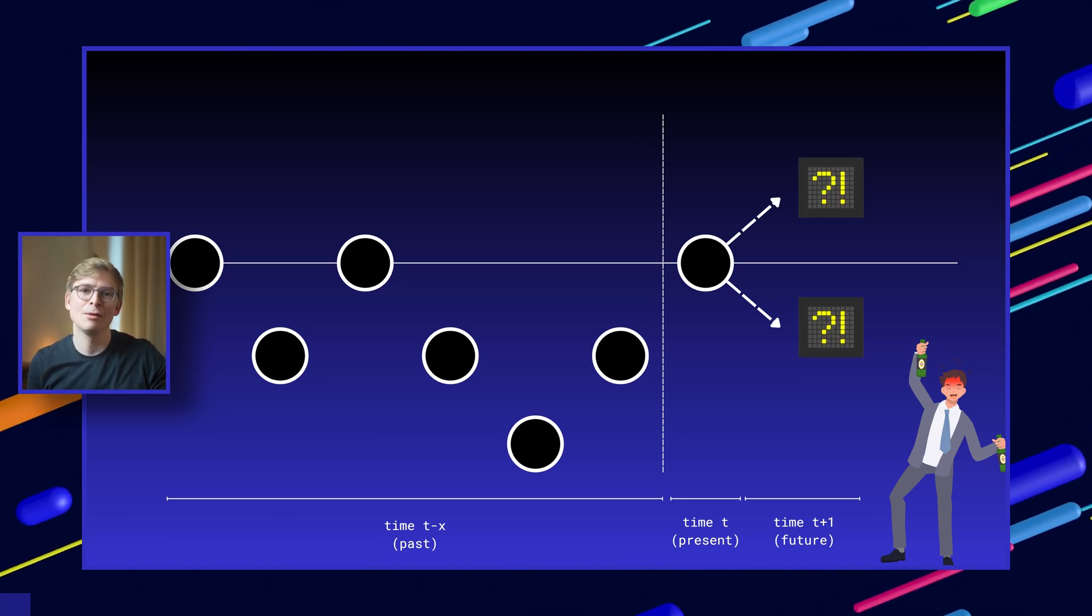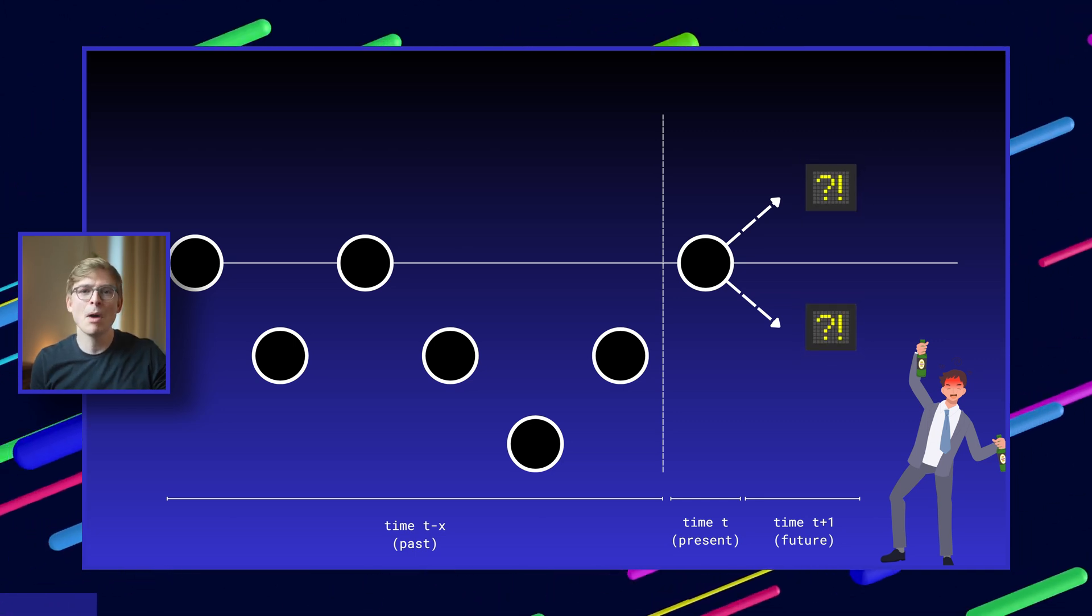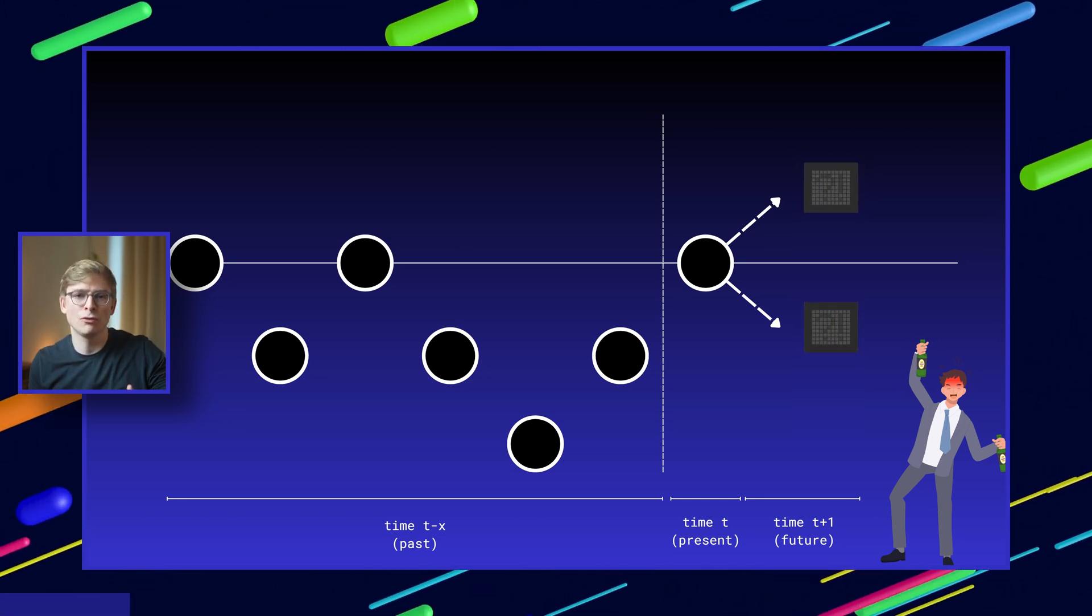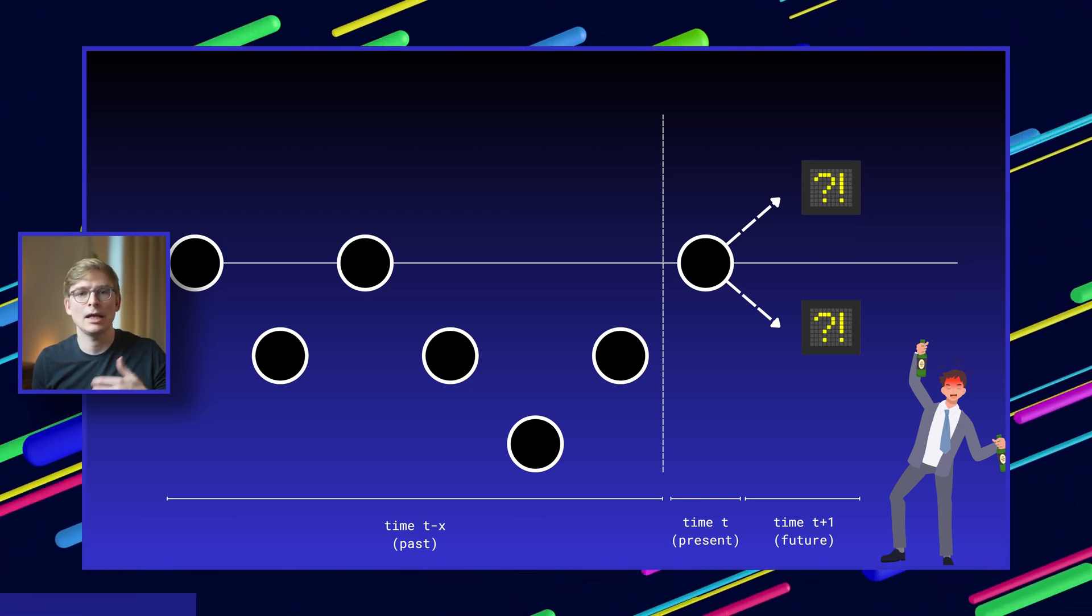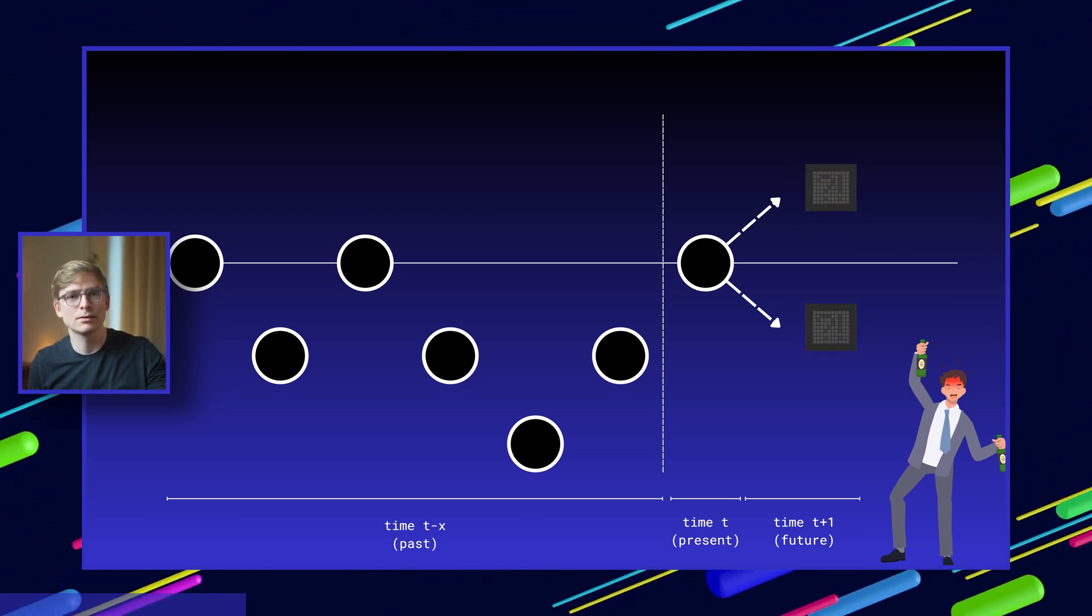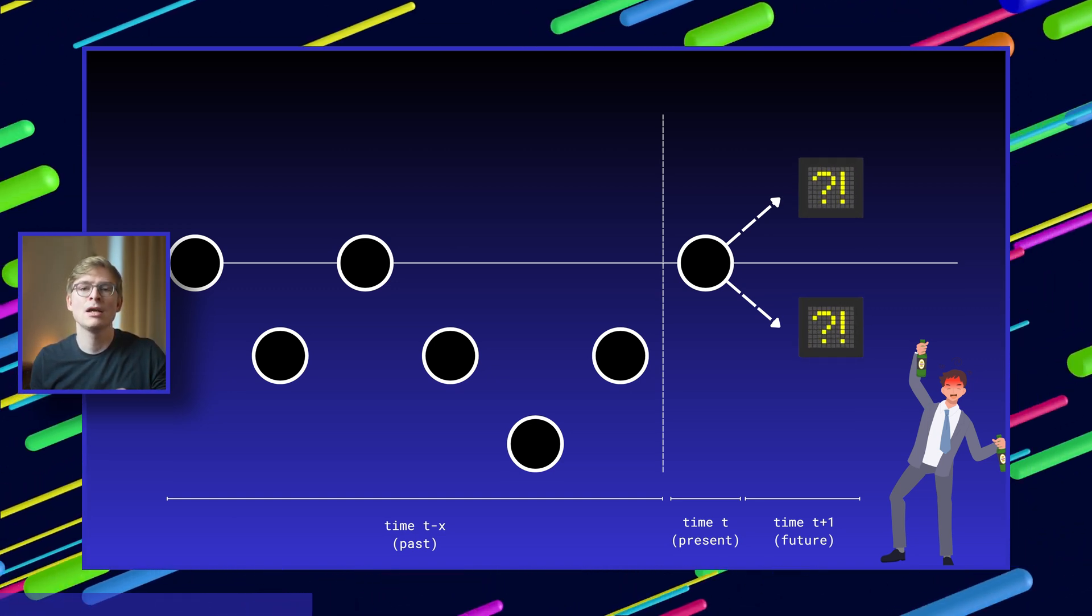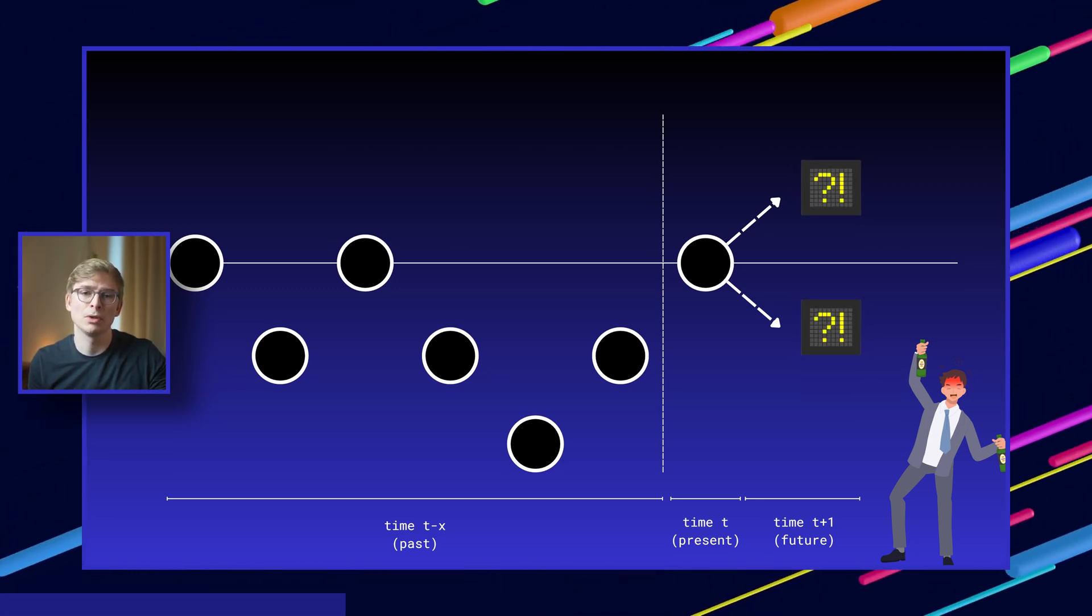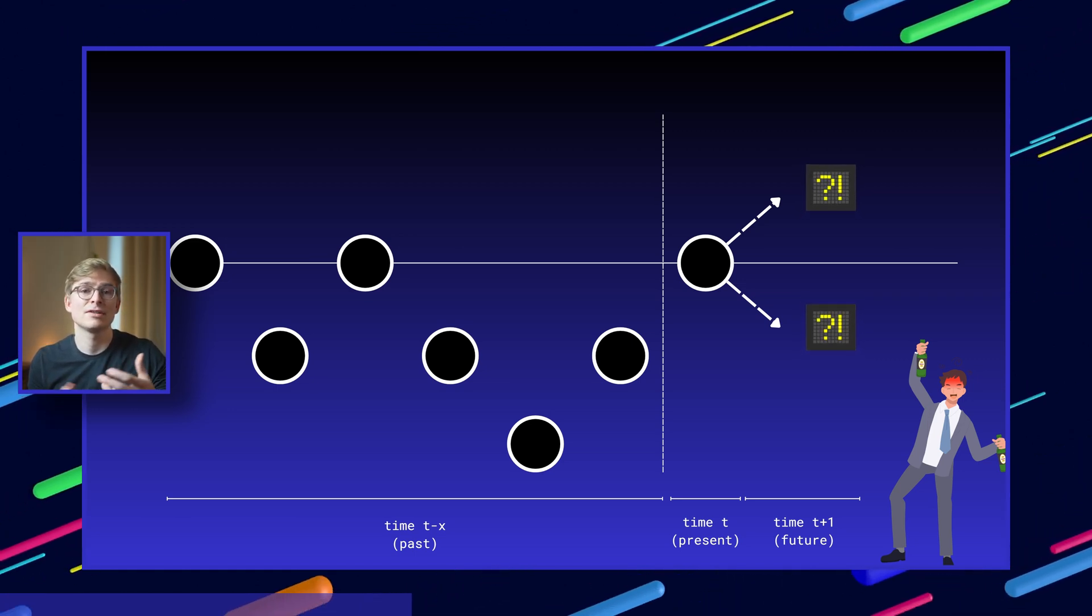This is where we venture into the realm of semi-Markov models or semi-Markov processes. Semi-Markov models also follow the Markov property in terms of state transitions, but the difference lies in how the time between state transitions is handled. So the time spent in a state before transitioning can vary in a semi-Markov model, whereas in Markov models the time between transitions is typically fixed.